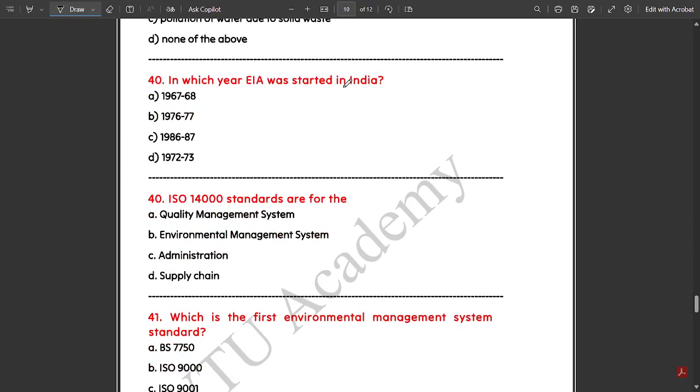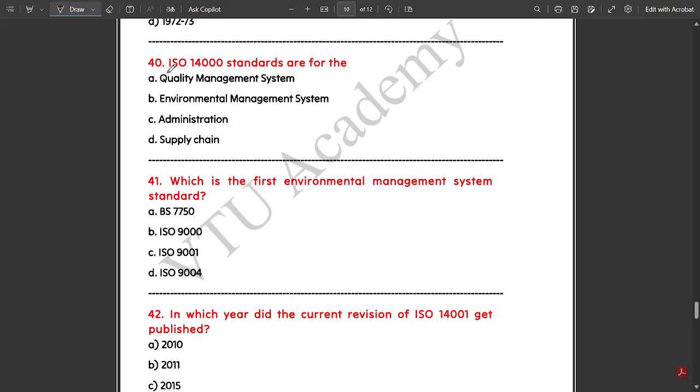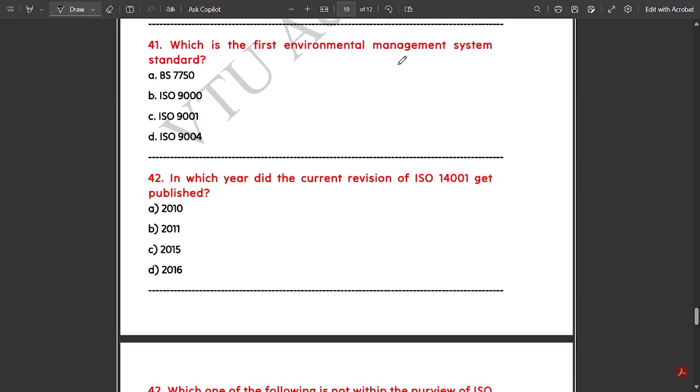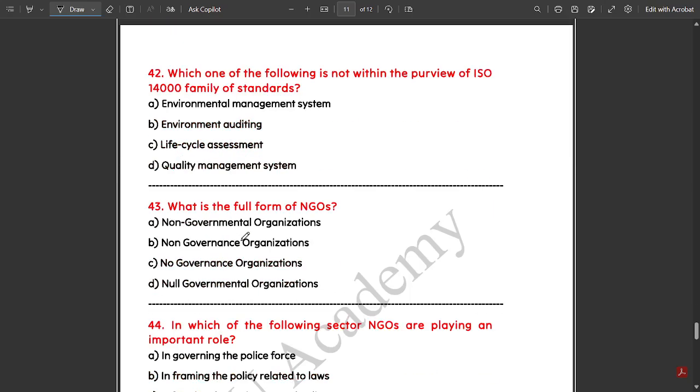In which year was EIA started in India? EIA was started in India in 1994. In India, ISO 14000 standards are for environmental management system. Which is the first environmental management system standard? The answer is BS 7750. In which year did the current revision of ISO 14001 get published? The answer is 2015.